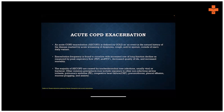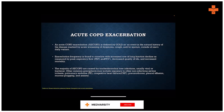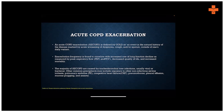Lung function decline is measured by peak expiratory flow and FEV1, and correlates with reduced quality of life and increased mortality. These patients are often told on an OPD basis to monitor their FEV1, or they can do it with a peak expiratory flow meter. If it falls below 10%, you usually ask them to report to the emergency or OPD. Majority of these exacerbations are caused by tracheobronchial tree infections, usually viral or bacterial.